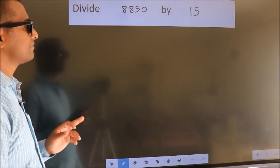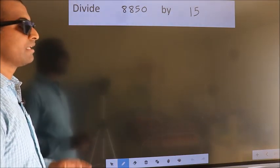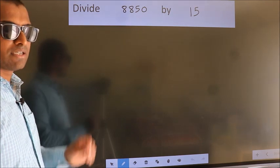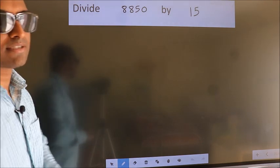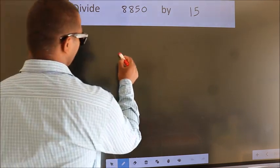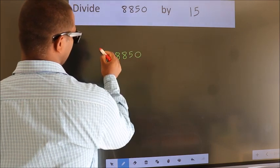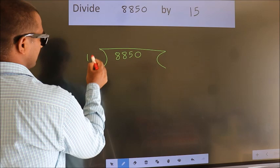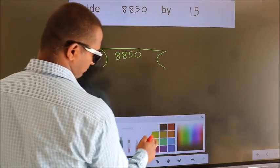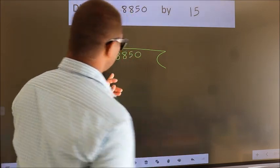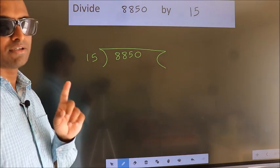Divide 8850 by 15. To do this division, we should frame it in this way. 8850 here, 15 here. This is your step 1.